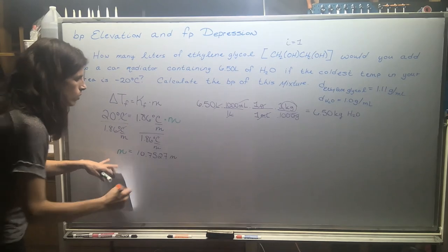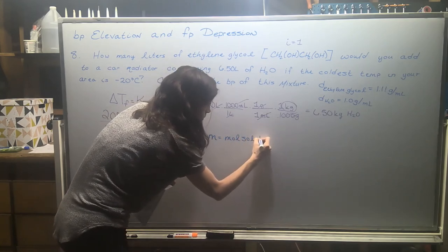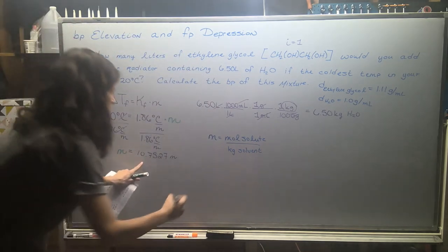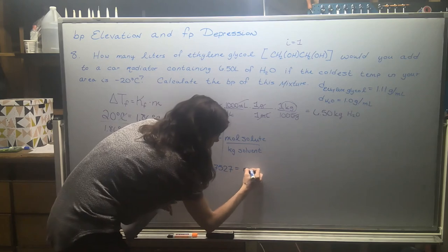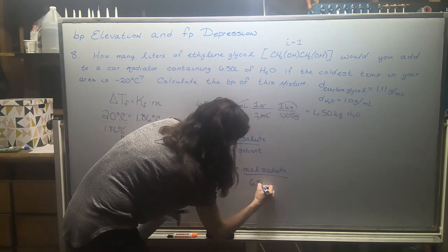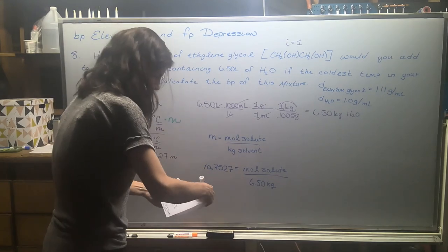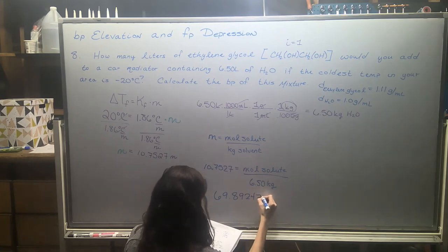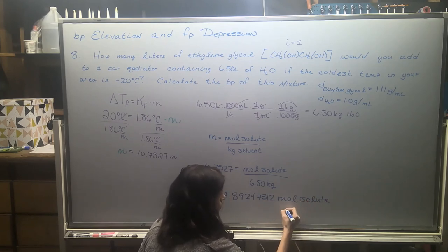So now with our molality equation, we know that molality is moles of solute over kilograms of solvent. So I'm going to do 10.7527 equals moles of solute all over 6.50 kilograms. And I'm going to cross multiply. So I'll do 10.7527 times 6.50. And I wind up with 69.89 moles of solute, which happens to be our antifreeze, our ethylene glycol.